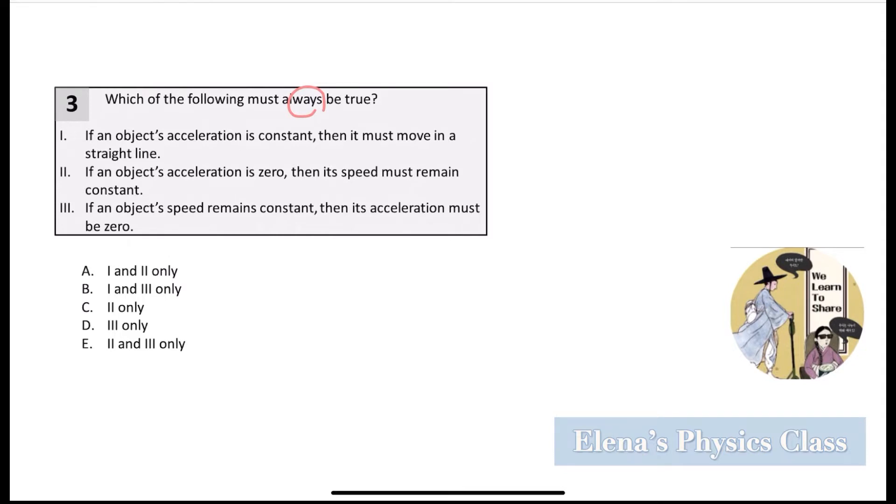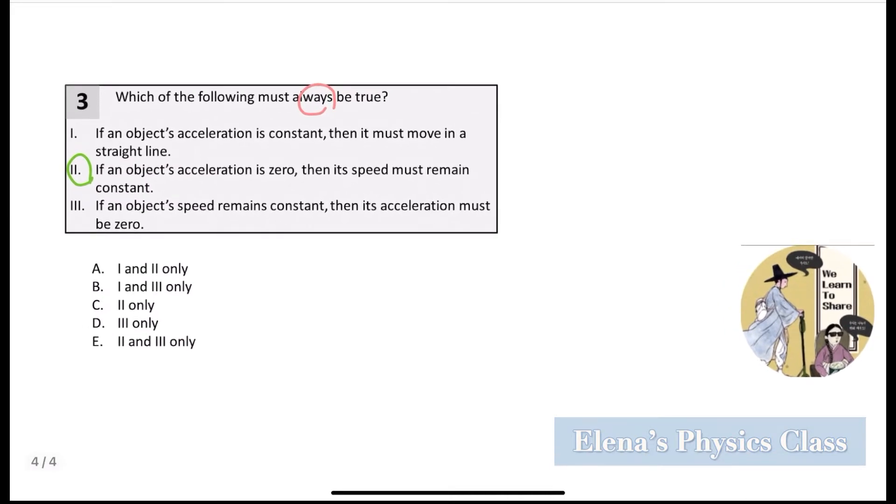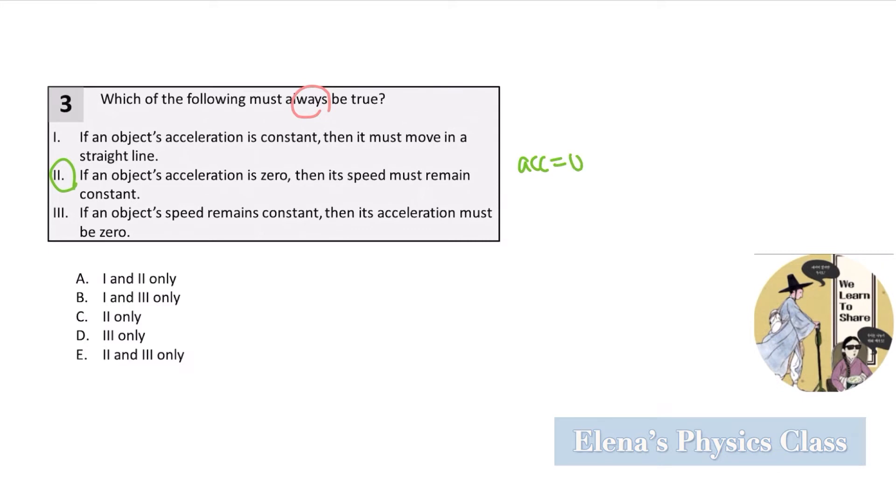Now, let's just circle the obvious answer. You can clearly see how 2 is right, because this is the definition of a constant velocity or a constant speed motion. When you say that the acceleration is 0, it means that the net force is also 0, and that it's a constant speed or velocity motion. The speed also must remain constant, and this is obviously right.